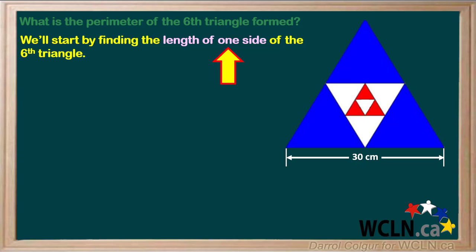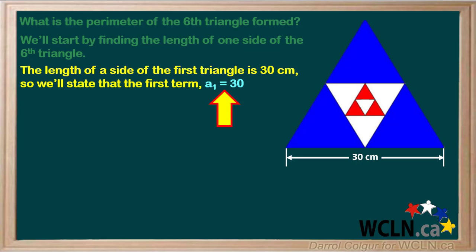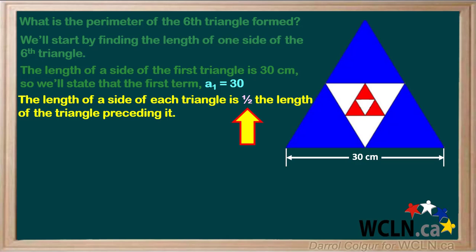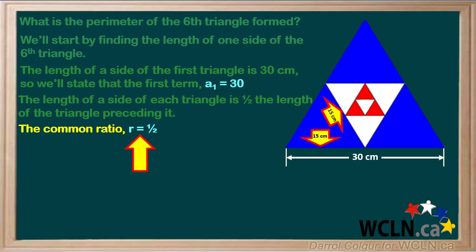We'll start by finding the length of one side of the sixth triangle, then calculate the perimeter from this. The length of a side of the first triangle is 30 centimeters, so we can create a geometric sequence for which the first term A1 equals 30. You can see by looking at the diagram that the length of a side of each triangle is one half the length of the triangle preceding it. For example, the length of one side of the larger white equilateral triangle is one half the length of the blue triangle, or 15 centimeters. So we can state that the common ratio R is equal to one half.